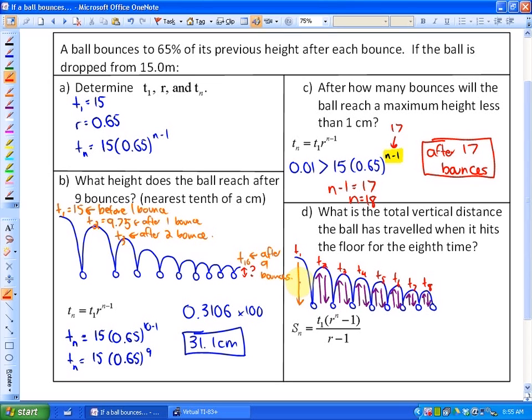So I'm going to find the sum of the first eight terms, multiply it by two, and then subtract the first distance, because that's only happening once. So that's the big picture here.